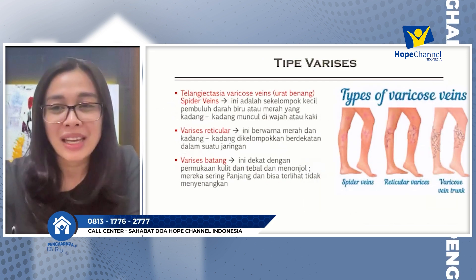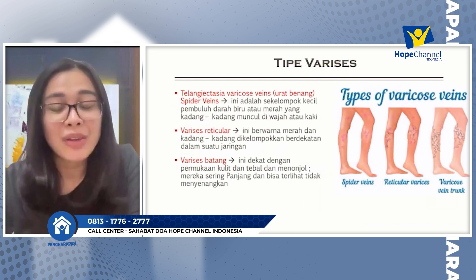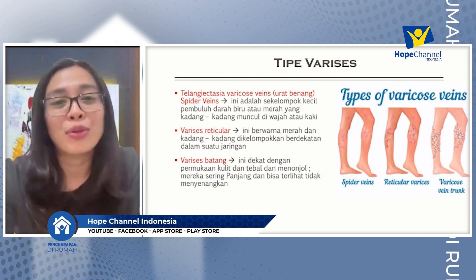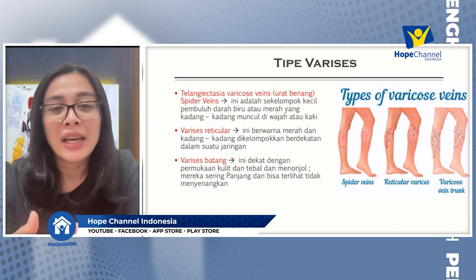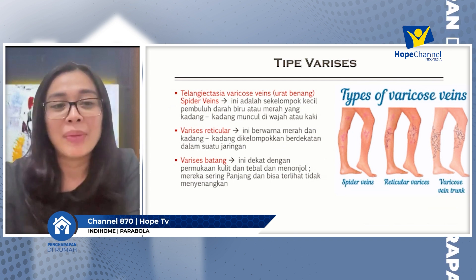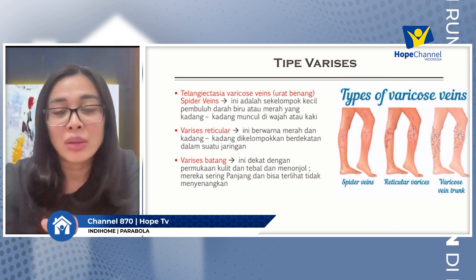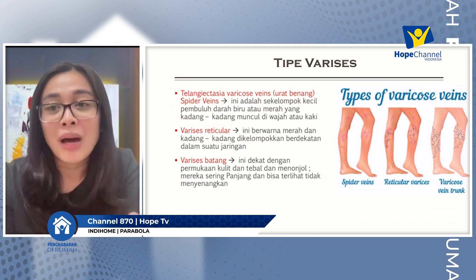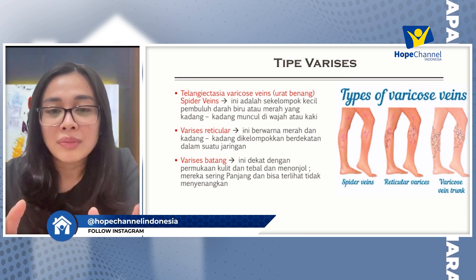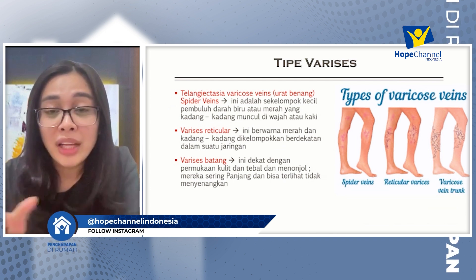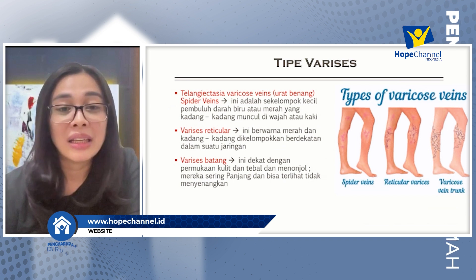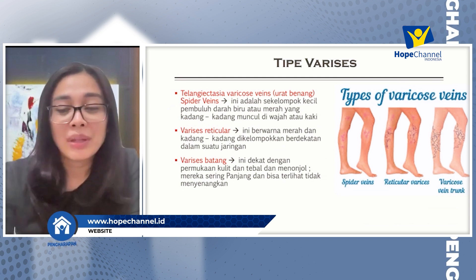Kita masuk dalam tipe-tipe varises. Tipe varises ada tiga. Yang pertama adalah spider veins atau tipe seperti sarang laba-laba. Biasanya ini adalah kumpulan pembuluh darah yang warnanya biru yang biasanya ada pada daerah pipi dan juga kulit di betis di kaki.